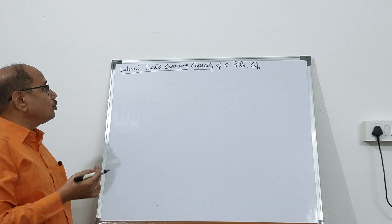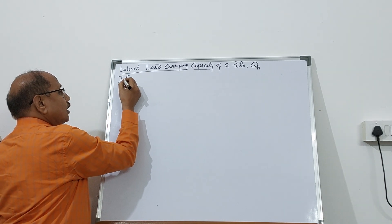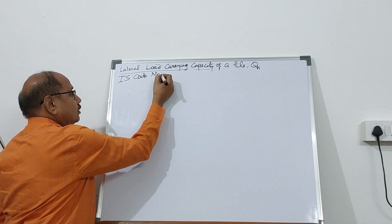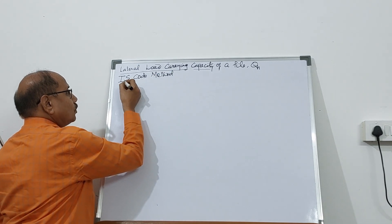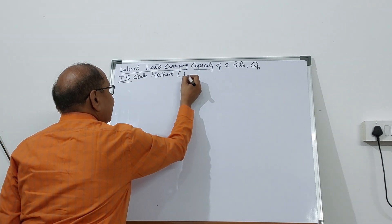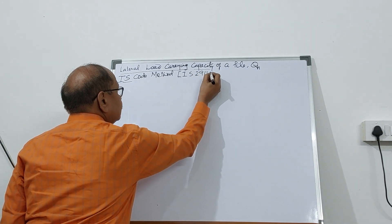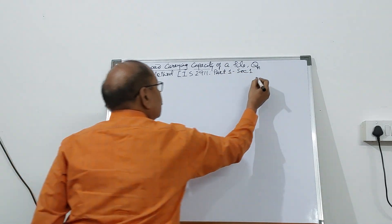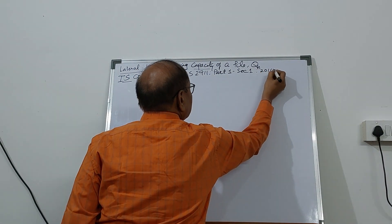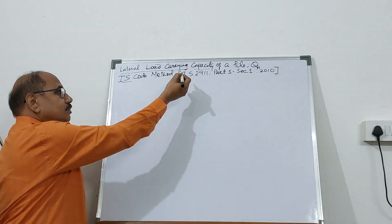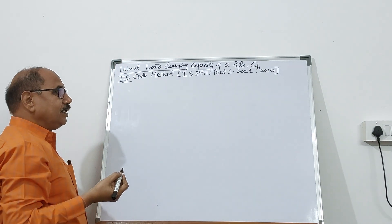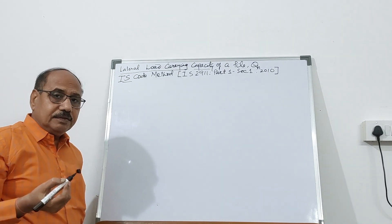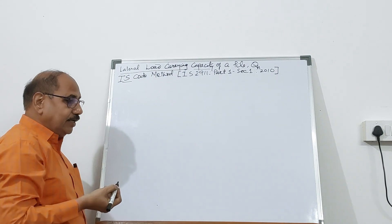In this video we are going to talk about the IS code method. If you refer IS 2911 Part 1, Section 1, 2010, it deals with the lateral load carrying capacity of a long pile, and the pile could be free-headed or it could be a fixed-headed pile.